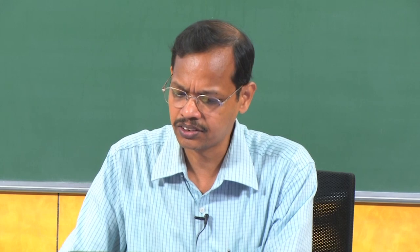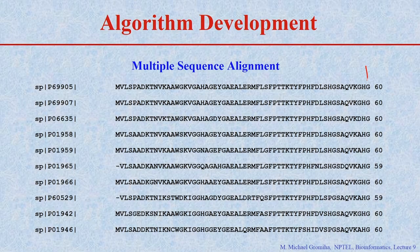Once we have the frequencies, we need to convert these frequencies into a score. For example, if we have this sequence at this position — what is the frequency of G at position number 6? It is 10 by 10, which equals 1. Now we take position number 9.